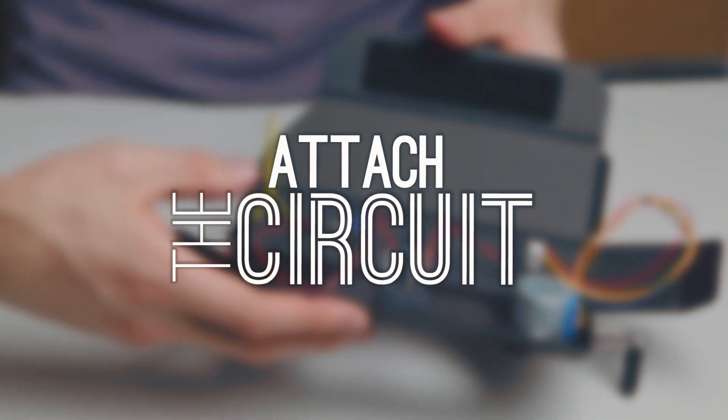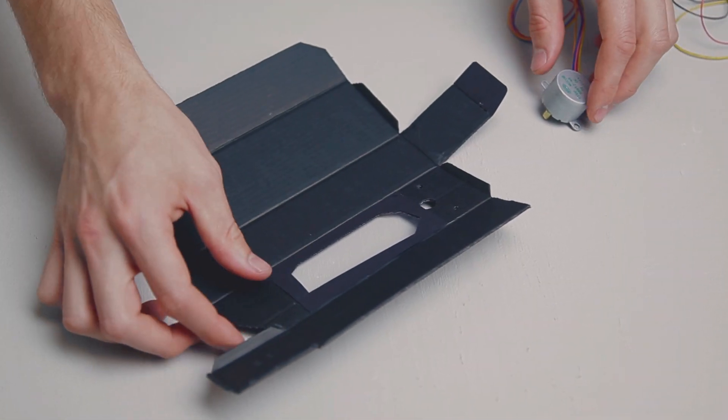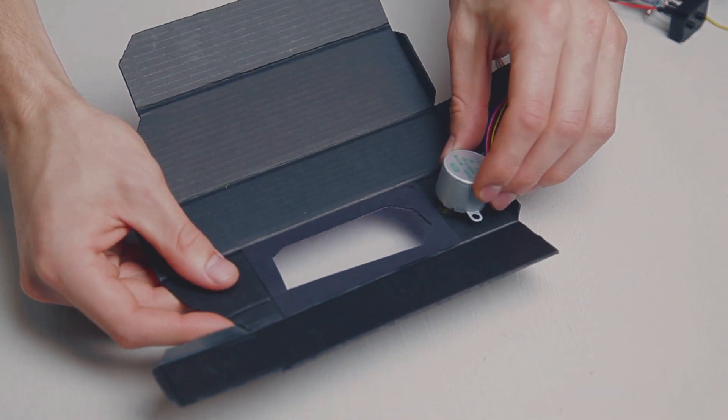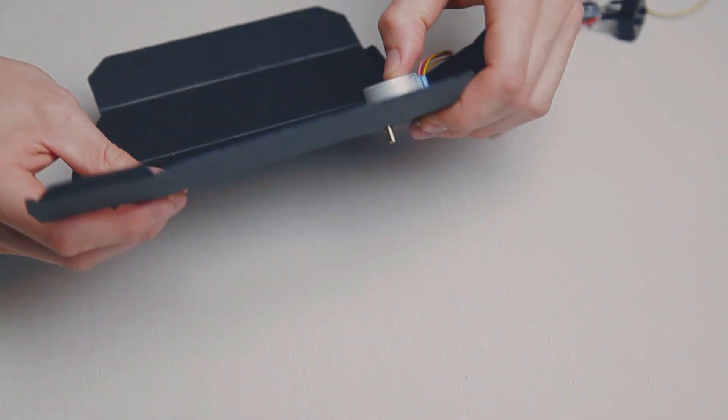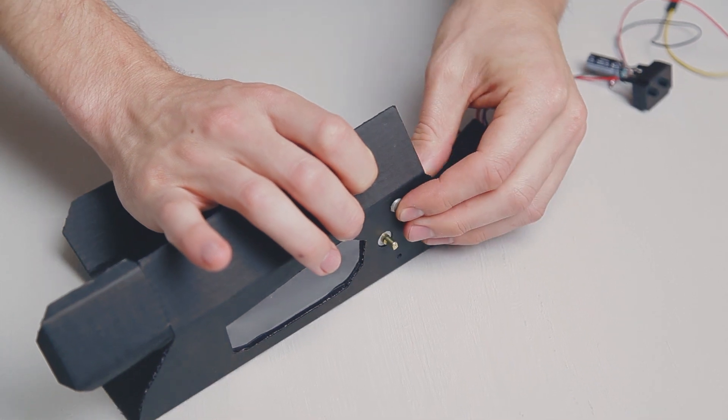Alright, now let's attach our circuit to our flashlight box. Take your motor and slide the shaft through the large hole. Then secure your motor in place with your two brads.